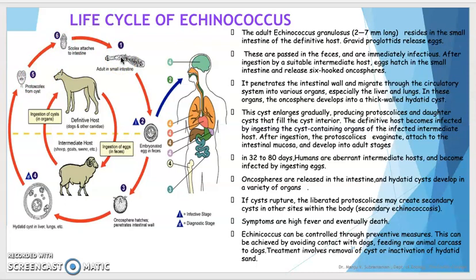The protoscolices attach to the intestinal mucosa and develop into adult Echinococcus within 32 to 80 days. The oncospheres are released in the intestine and the hydatid cyst develops in various organs. If the cyst ruptures, it liberates protoscolices and may seed secondary cysts in other sites within the body, causing secondary echinococcosis.